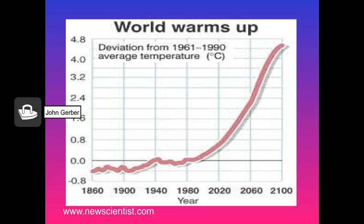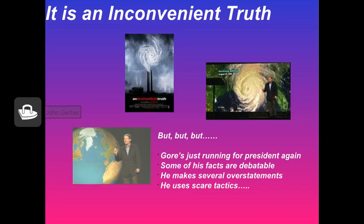The world warms up. In 2006, former Vice President Al Gore made a movie called An Inconvenient Truth, and it was seen by a lot of people — but very little has changed.